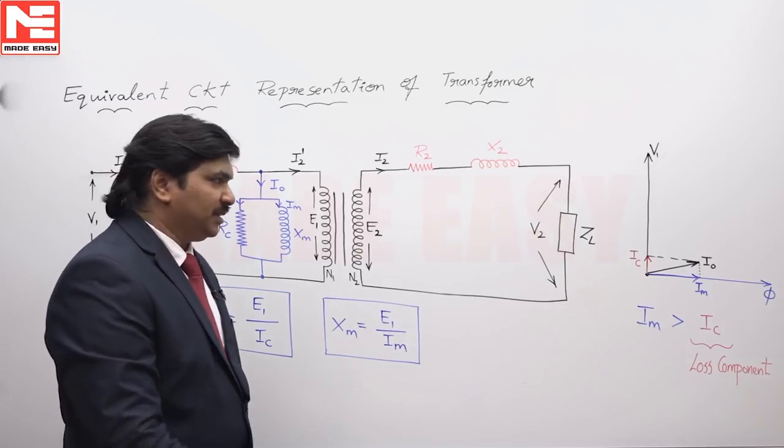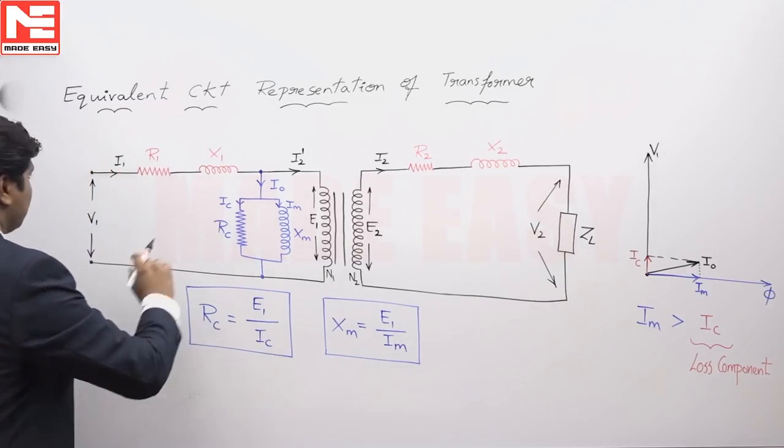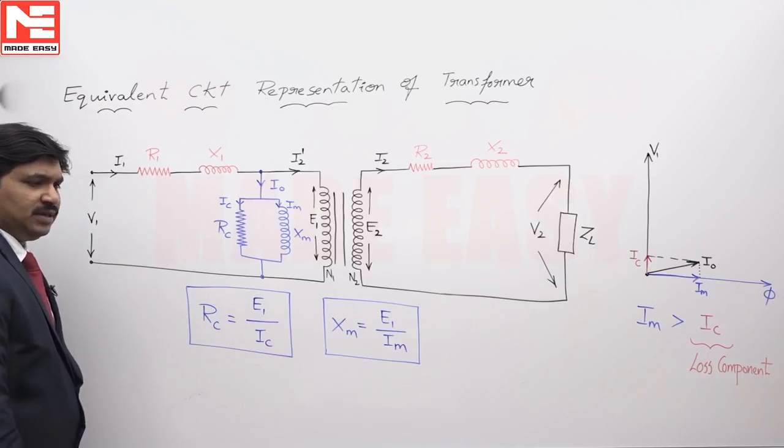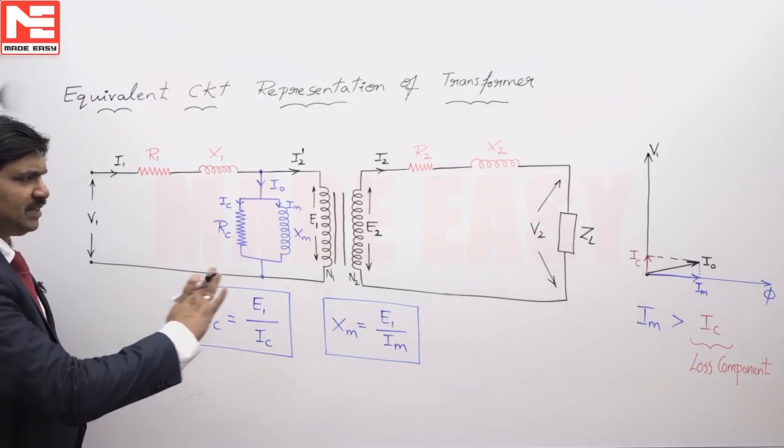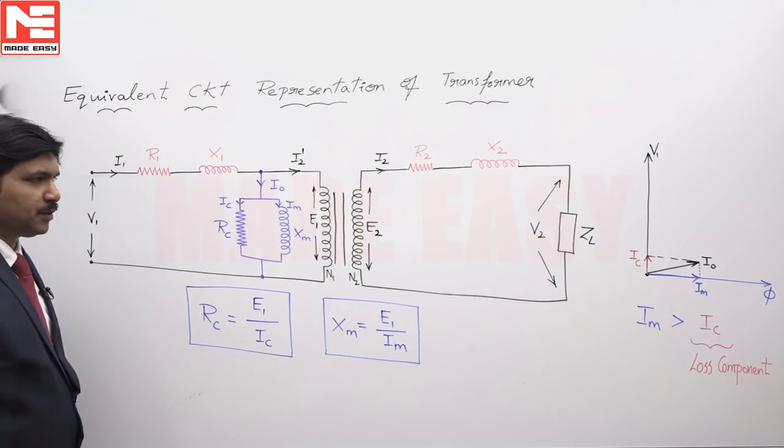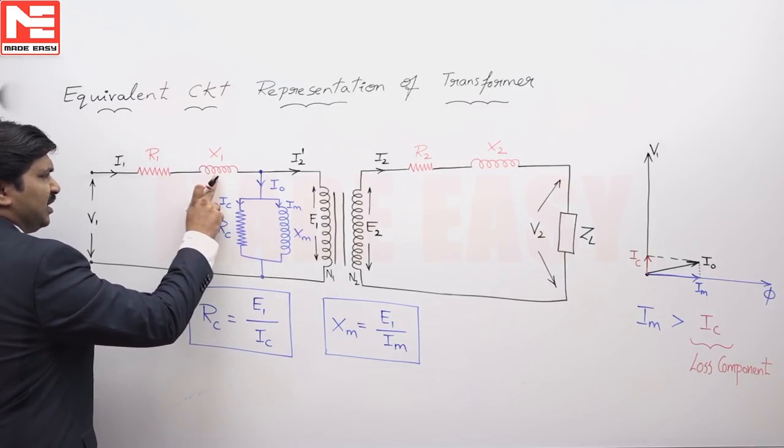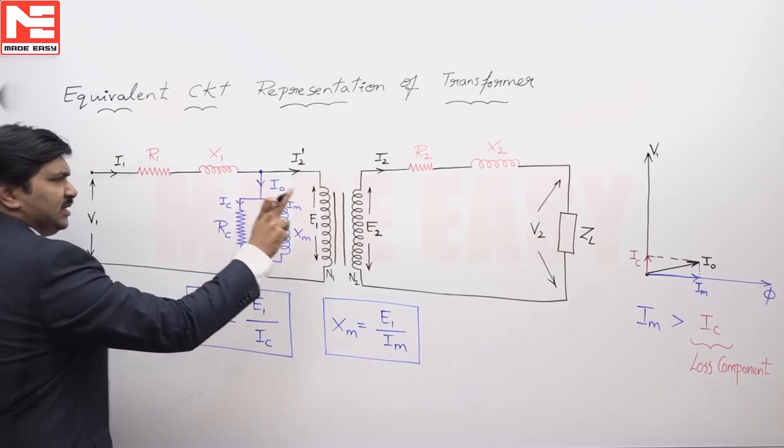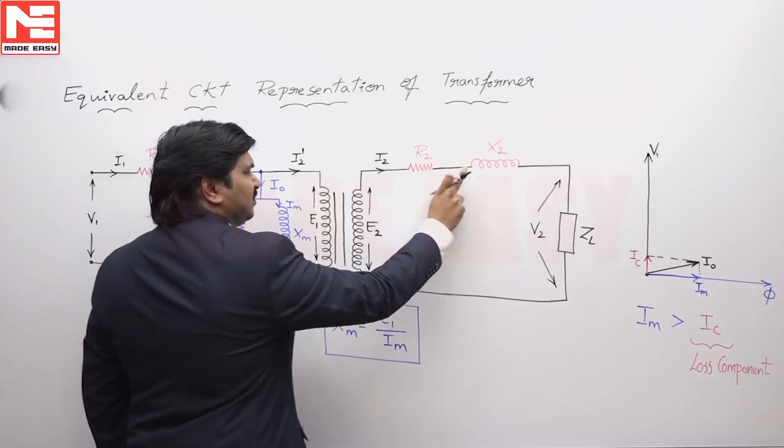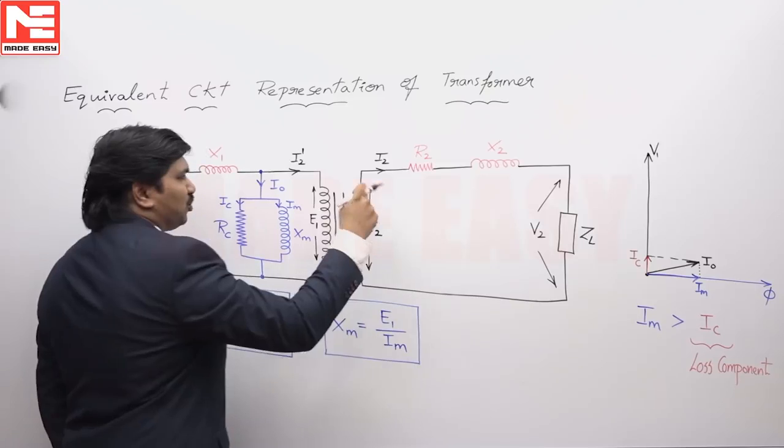Regarding the parameters, this is the equivalent circuit representation of a transformer. The primary winding contains resistance and reactance, secondary winding contains resistance and reactance, these are leakage reactances due to leakage flux.